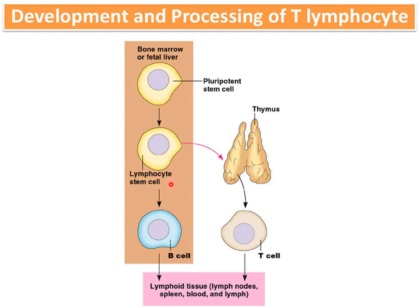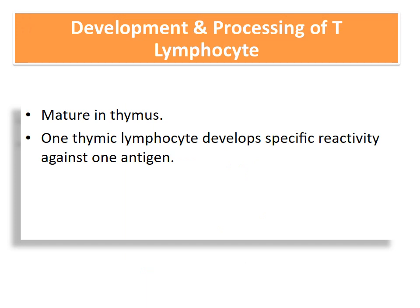These progenitor cells form both B lymphocytes and T lymphocytes in the bone marrow. The cells destined to become T lymphocytes migrate out of the bone marrow to the thymus gland, where they are pre-processed — or educated. That is why they are called T lymphocytes; the 'T' stands for thymus.